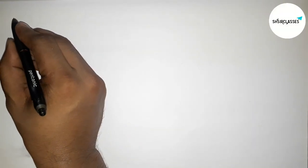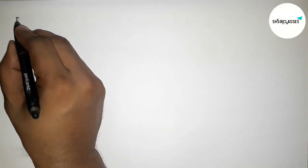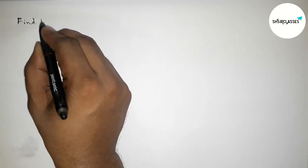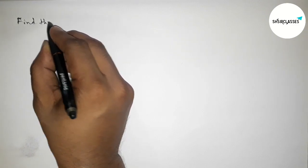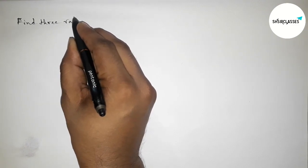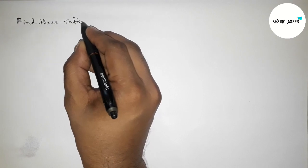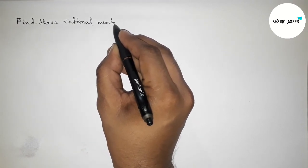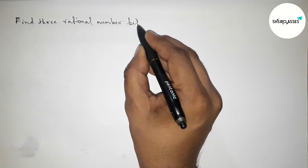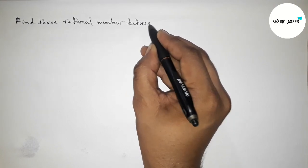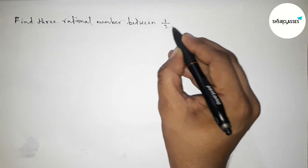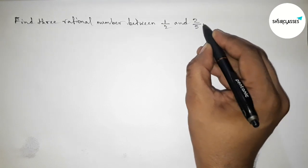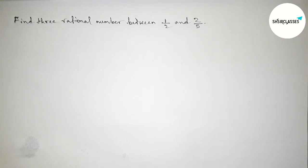Hi everyone, welcome to SI Share Classes. Today in this video we have to find three rational numbers between 1/2 and 2/5 in an easy way. Please watch the video till the end. So let's start.